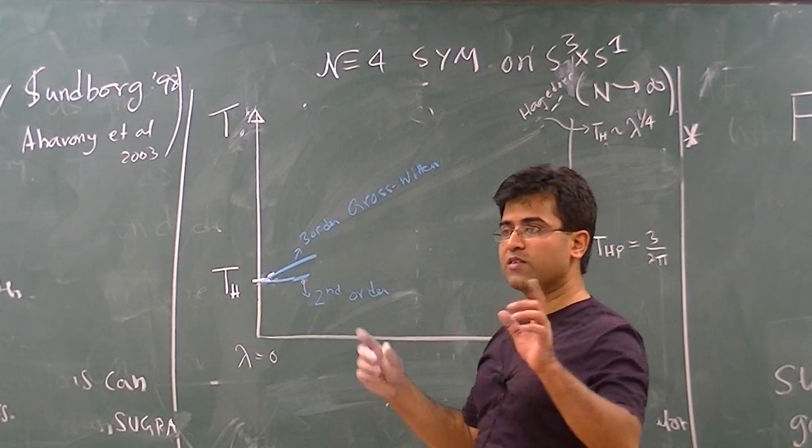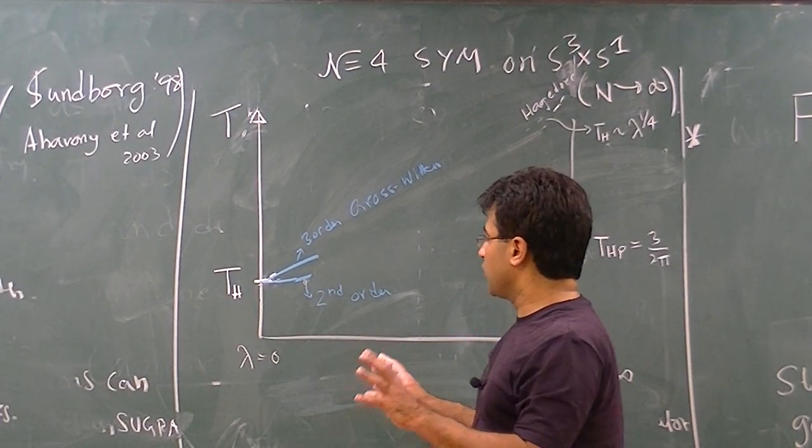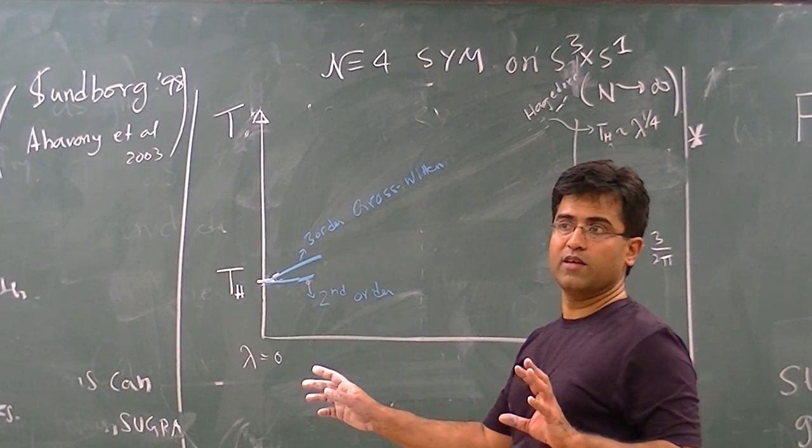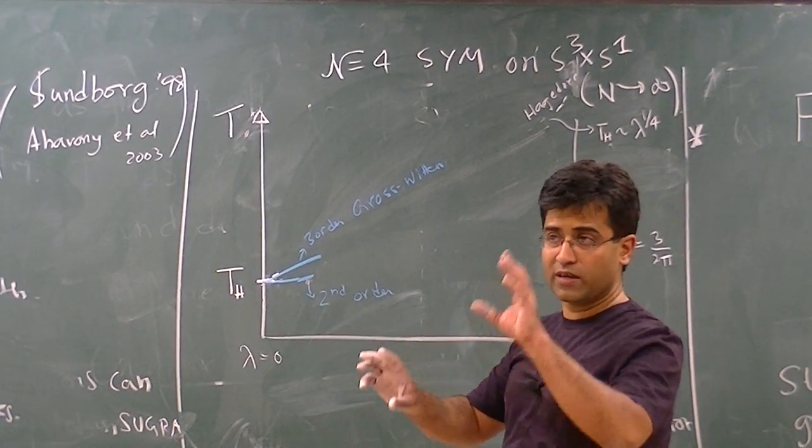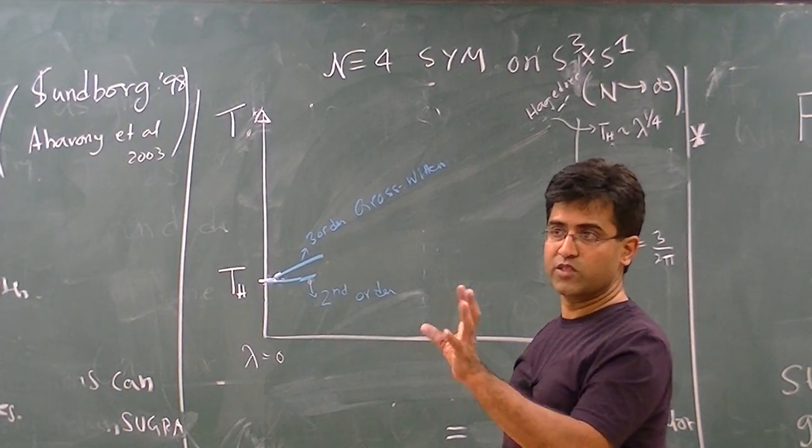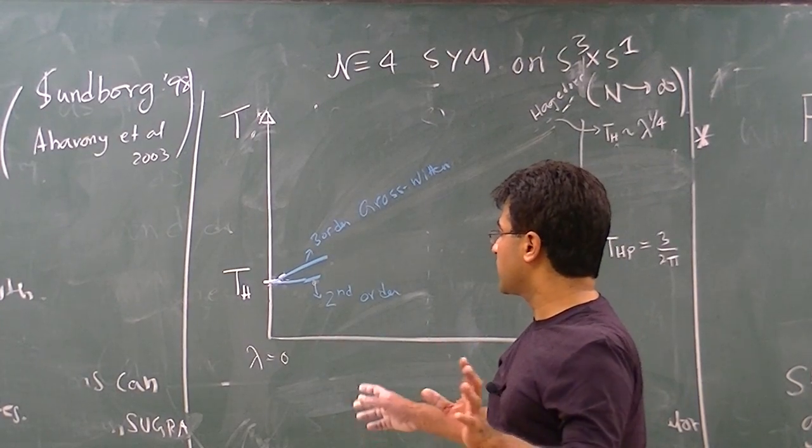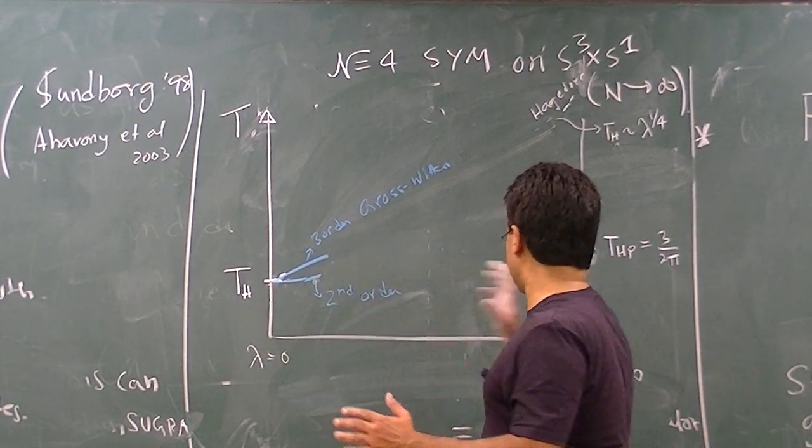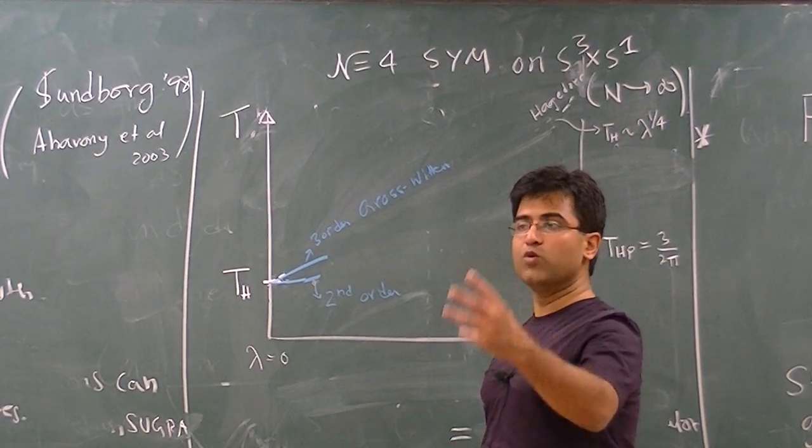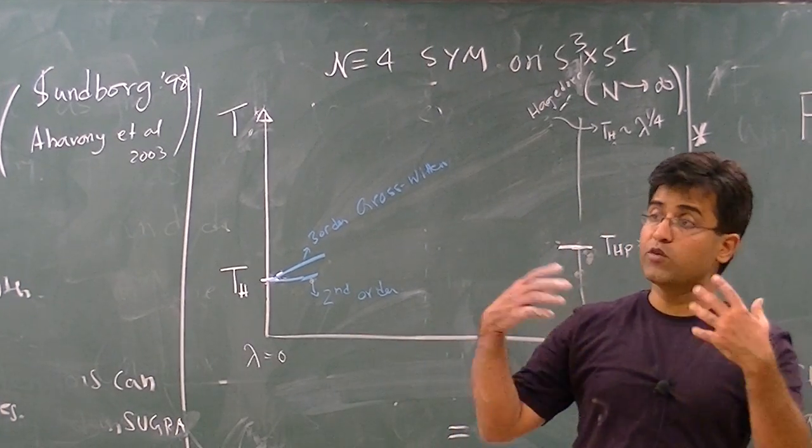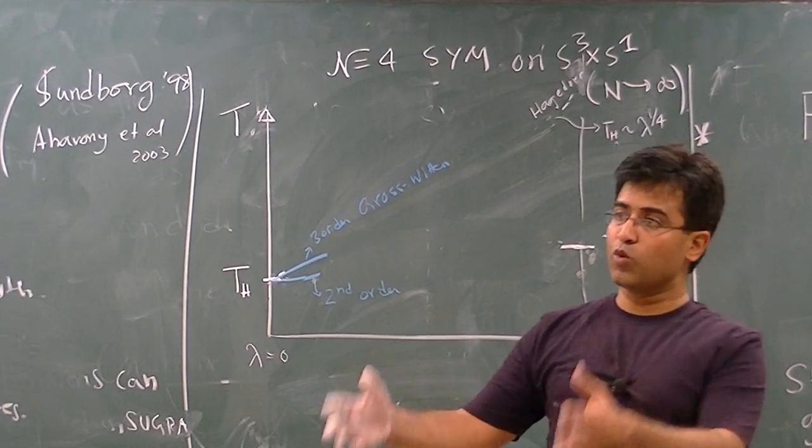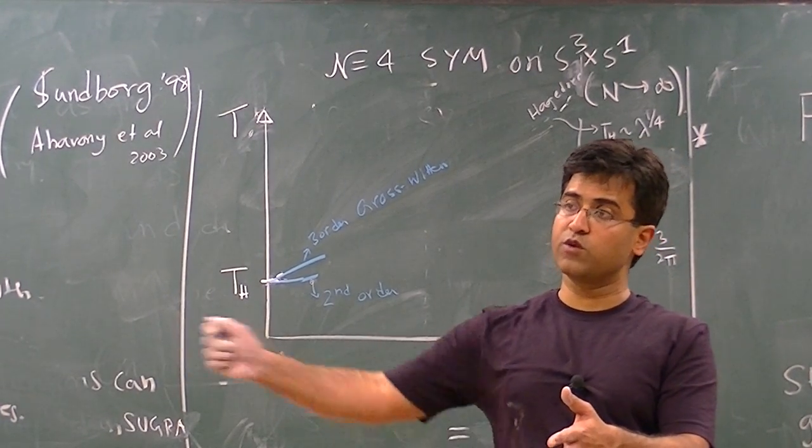It's like it's the usual thing that you may find the same phase diagram at weak and strong coupling, but the reason that you get that kind of phase diagram, the dynamical reason may be different in the two regimes. So the point is that if they are the same at both weak and strong coupling, at least you can then say that I can try to determine the phase diagram of the theory at weak coupling, and hope that there is no phase transition or non-analyticity as a function of the 't Hooft coupling.